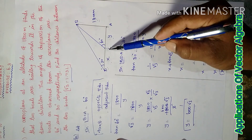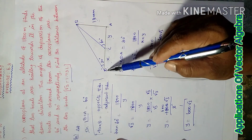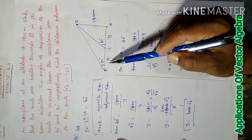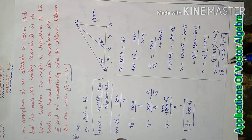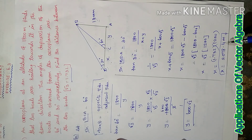Therefore the distance between boat one and boat two equals x, which is 2078.4 meters. Hence proved.